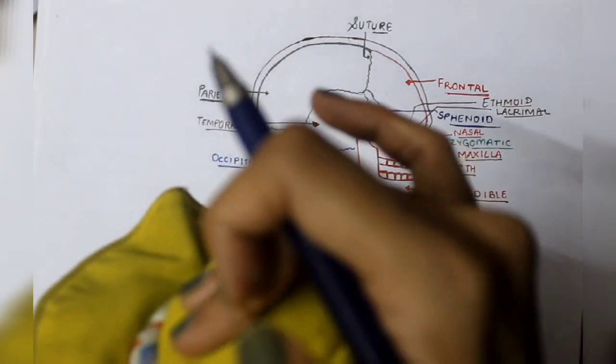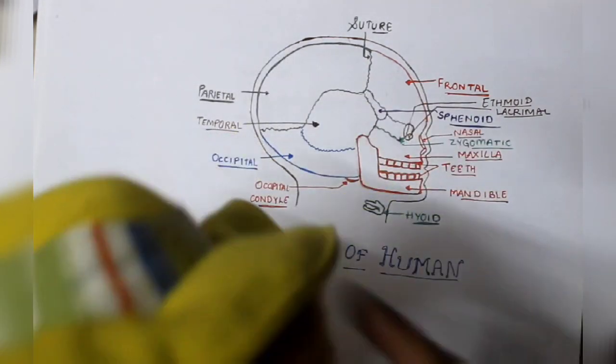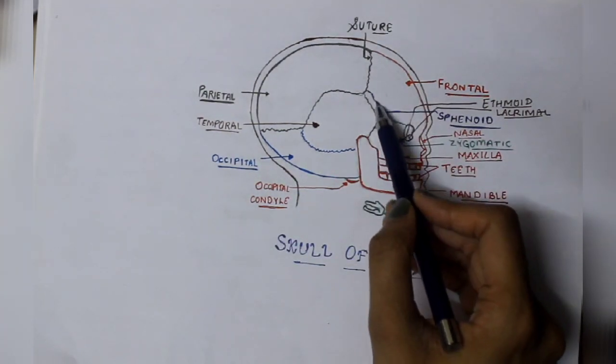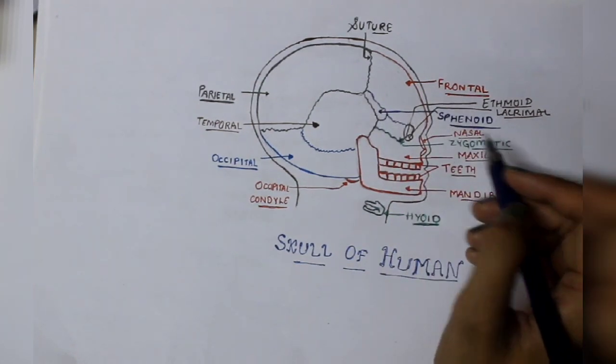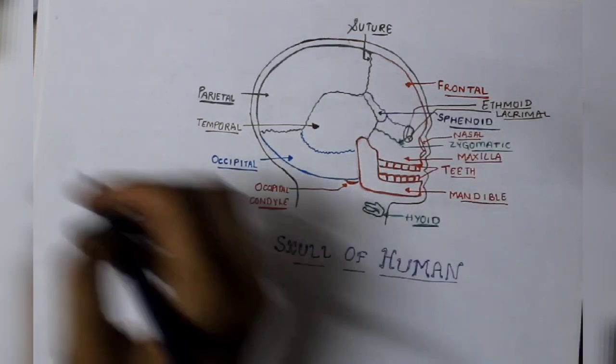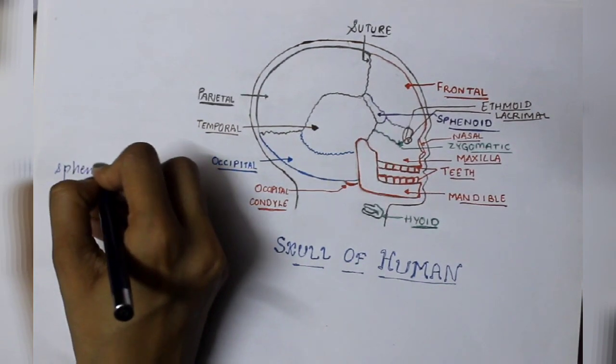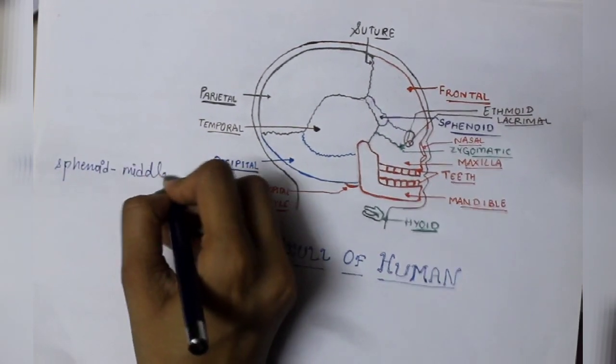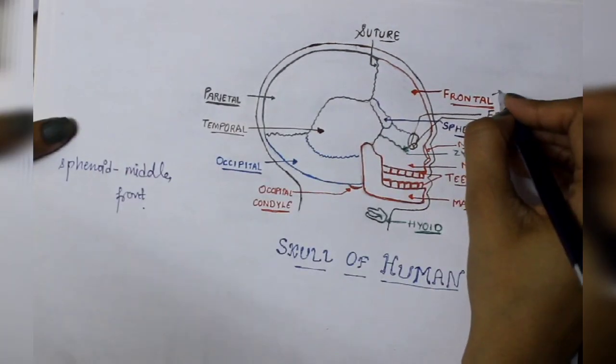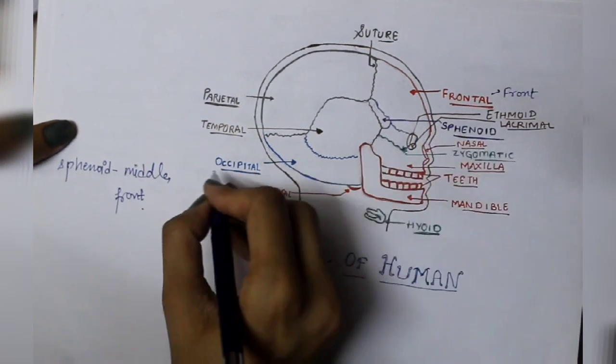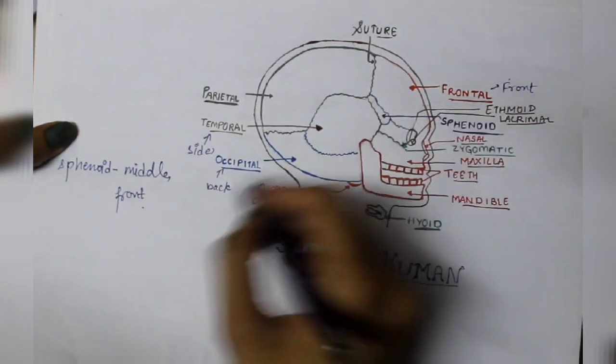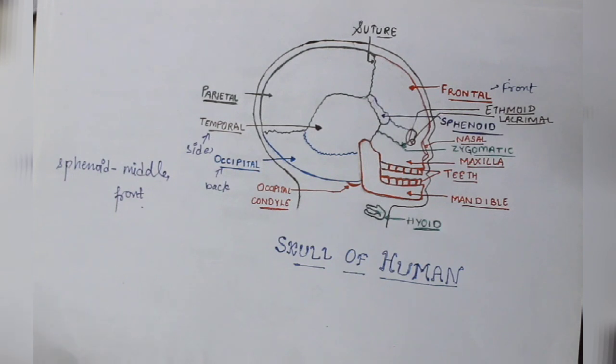All the way frontal, then parietal, then occipital, and side which is temporal bone. After this, middle front, the sphenoid bone. This sphenoid bone is connected and attached in the middle center. Sphenoid is present in the middle front region.